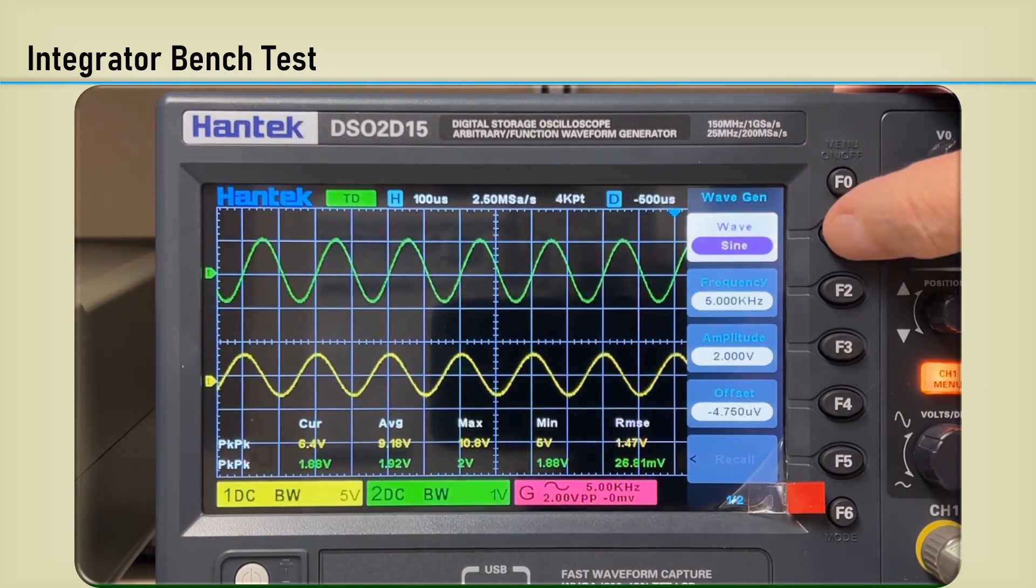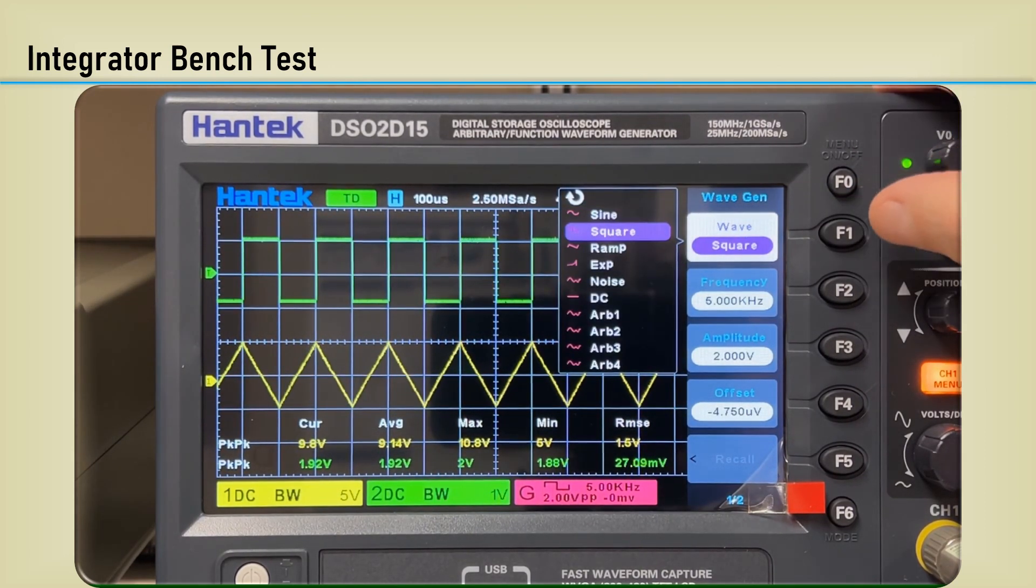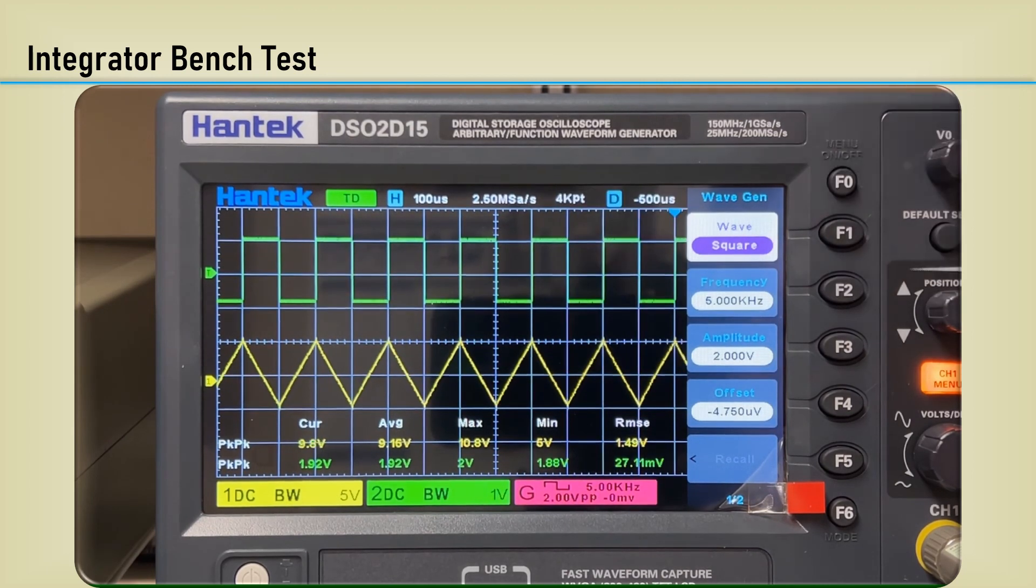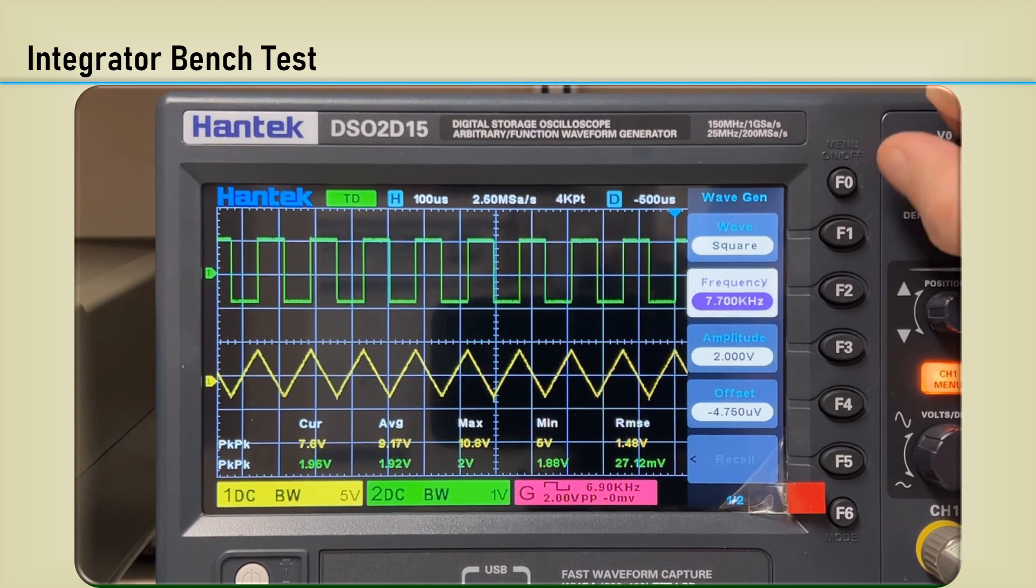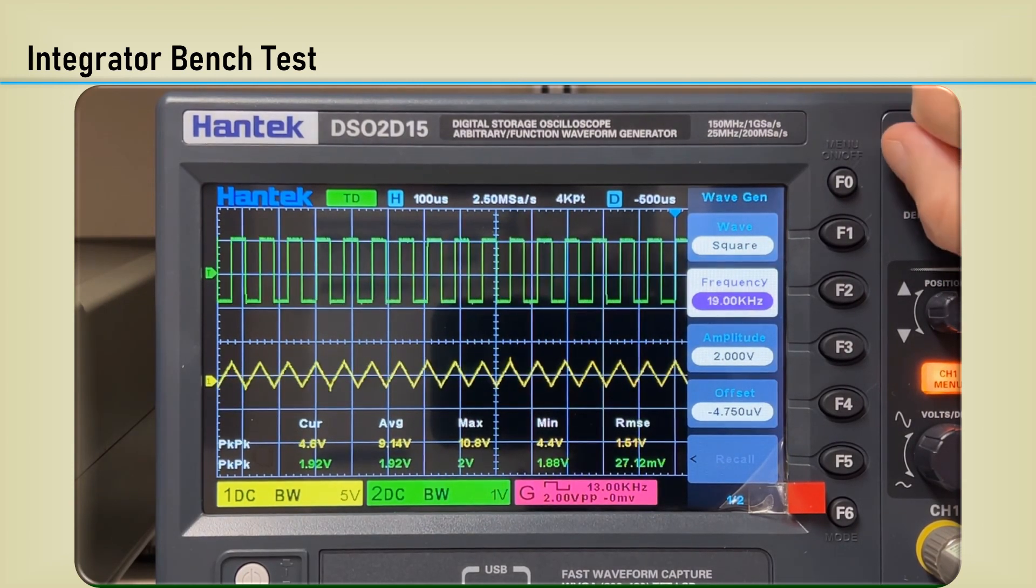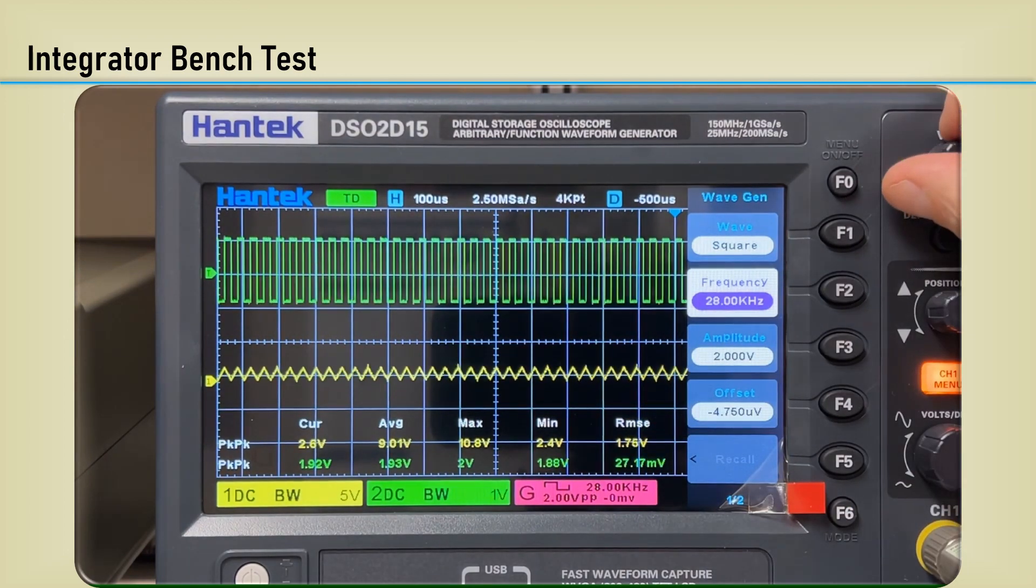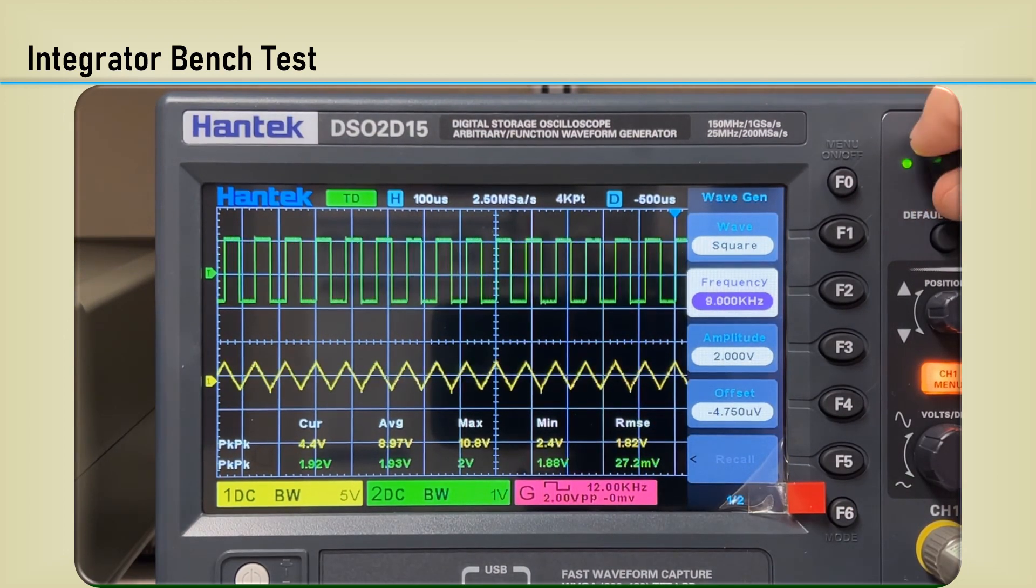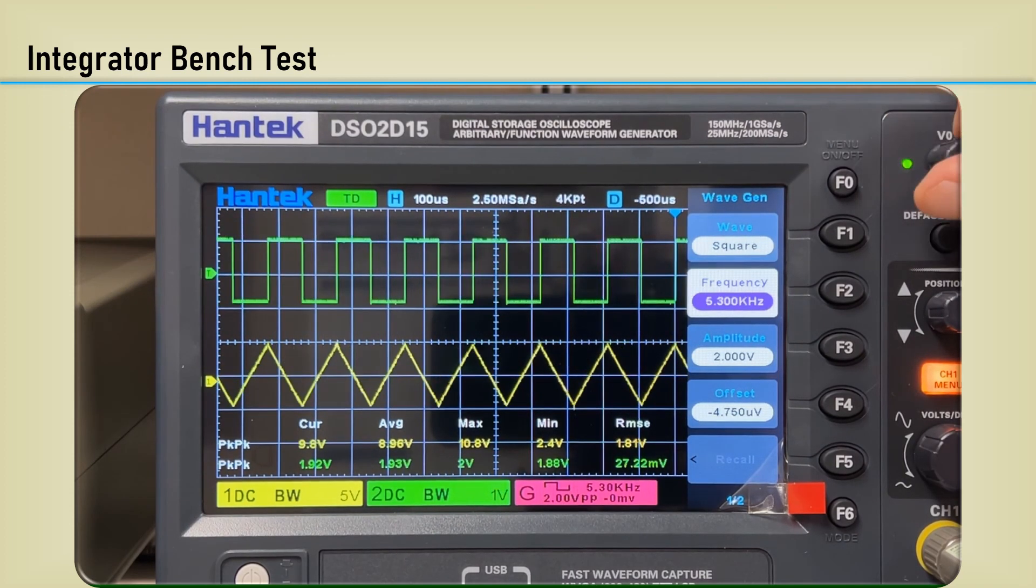And going back to square, we can see how it changes with frequency, as you would expect. If you increase the frequency, the time that it integrates is smaller, so therefore the amplitude of the output will be smaller. And if you decrease the frequency, eventually it will get to the point where the amplitude is so great that it starts clipping.